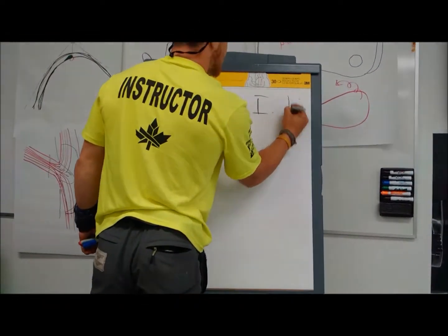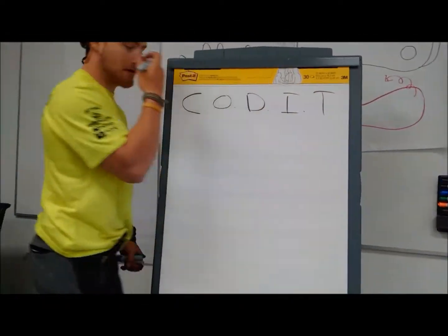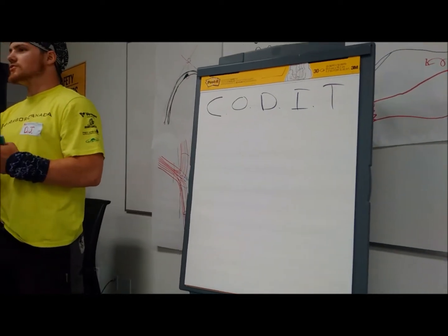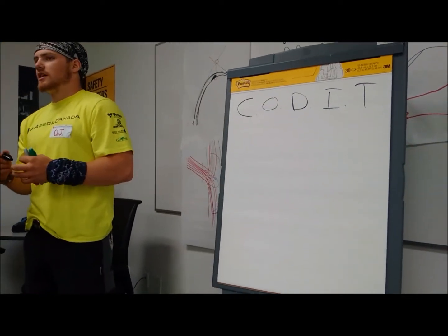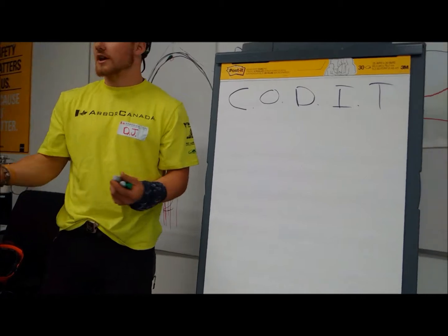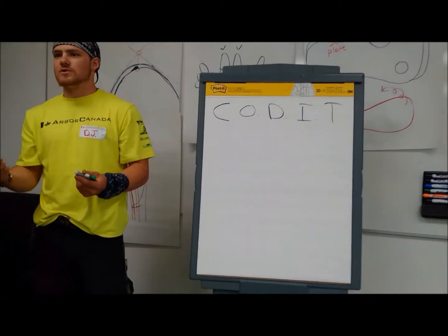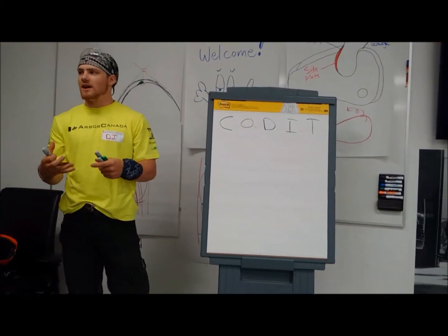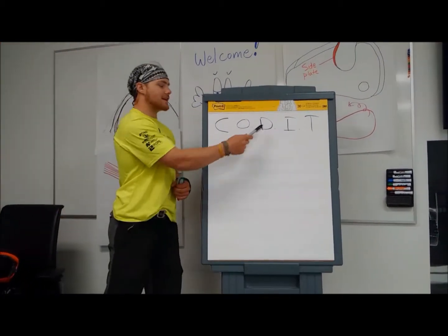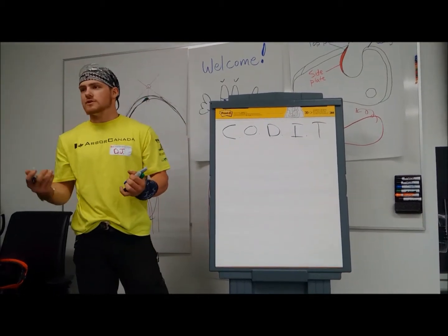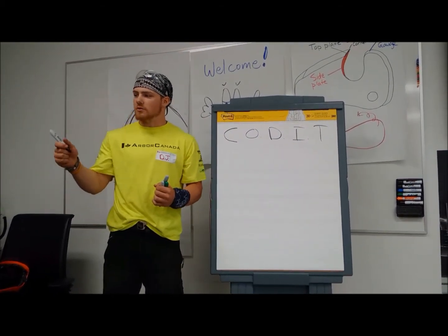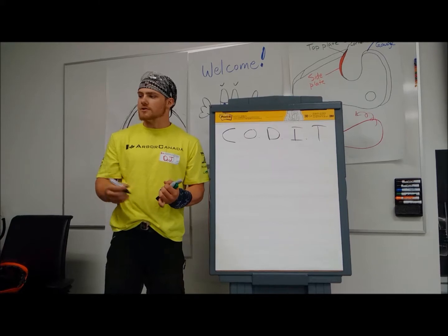It's an acronym we use called CODIT — it stands for Compartmentalization of Decay in Trees. Basically, we want to give the tree, using the cut that we make, the best chance it can at compartmentalizing and reduce the amount of decay that we're going to leave in the tree. We do that by identifying branch bark ridges and collars.